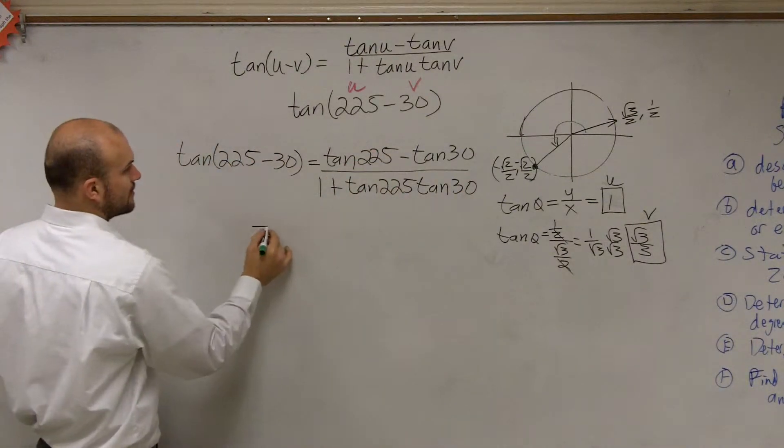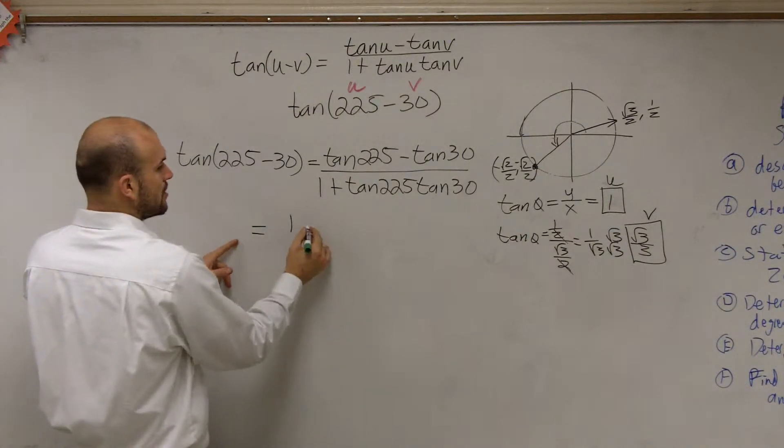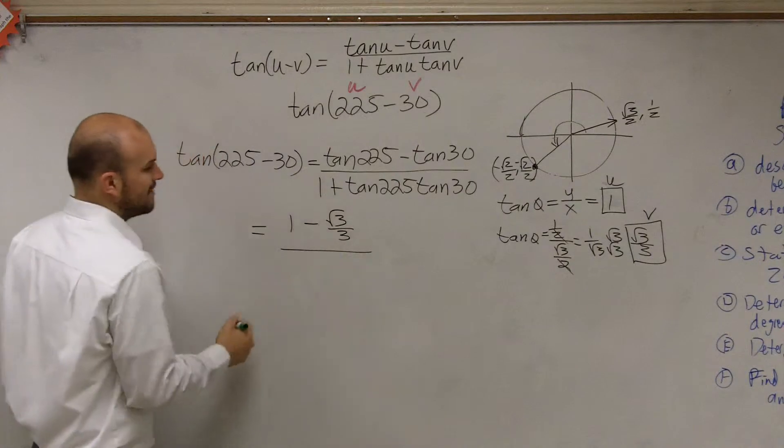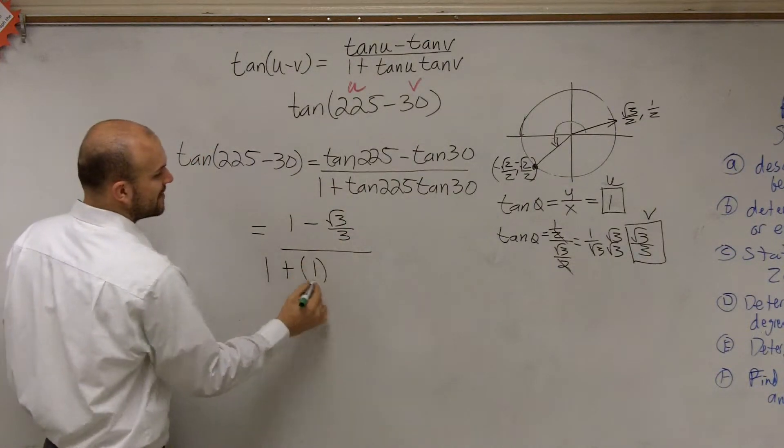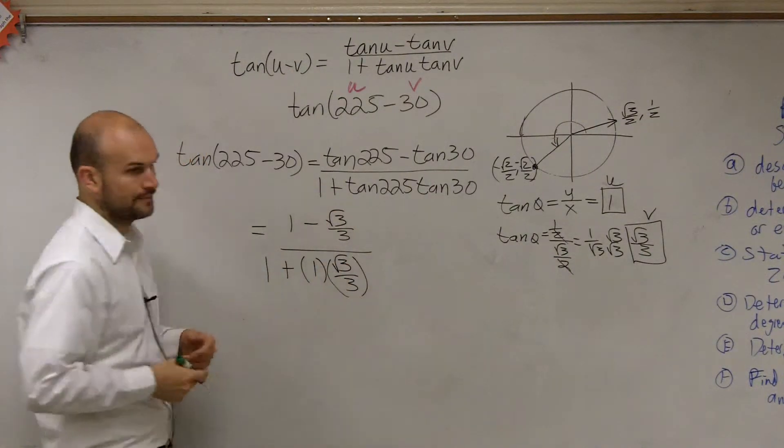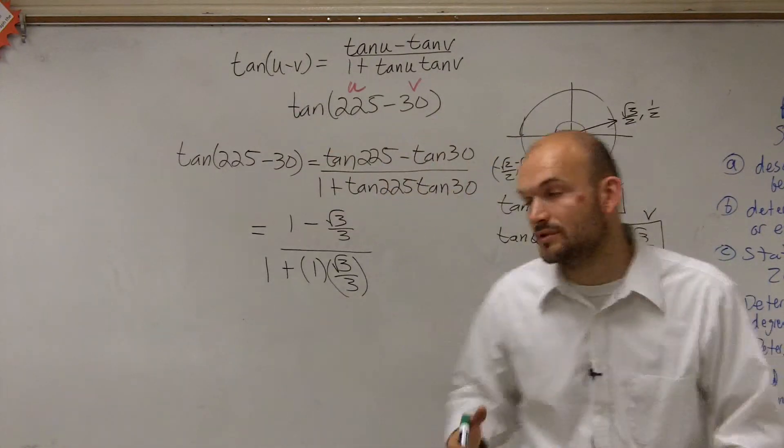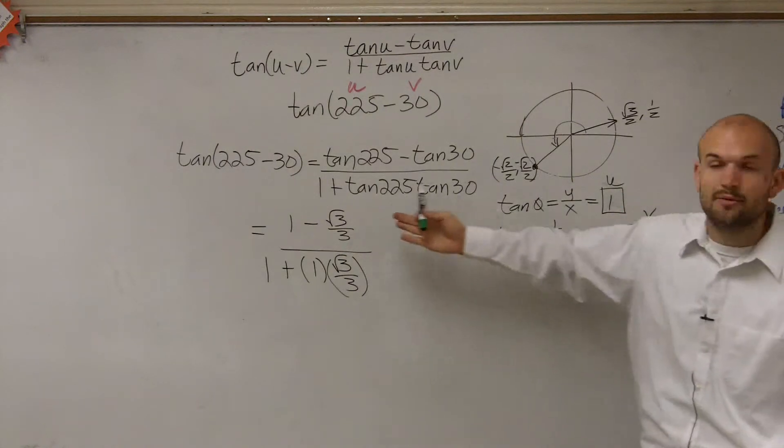Over here we evaluated for them. So now, the tangent of 225 degrees is 1 minus the square root of 3 over 3 divided by 1 plus tangent of 225 degrees is 1, and the tangent of 30 is the square root of 3 over 3. You see what I did right now? Basically, the only thing that I really worked on was evaluating for my points and then now plugging them in.